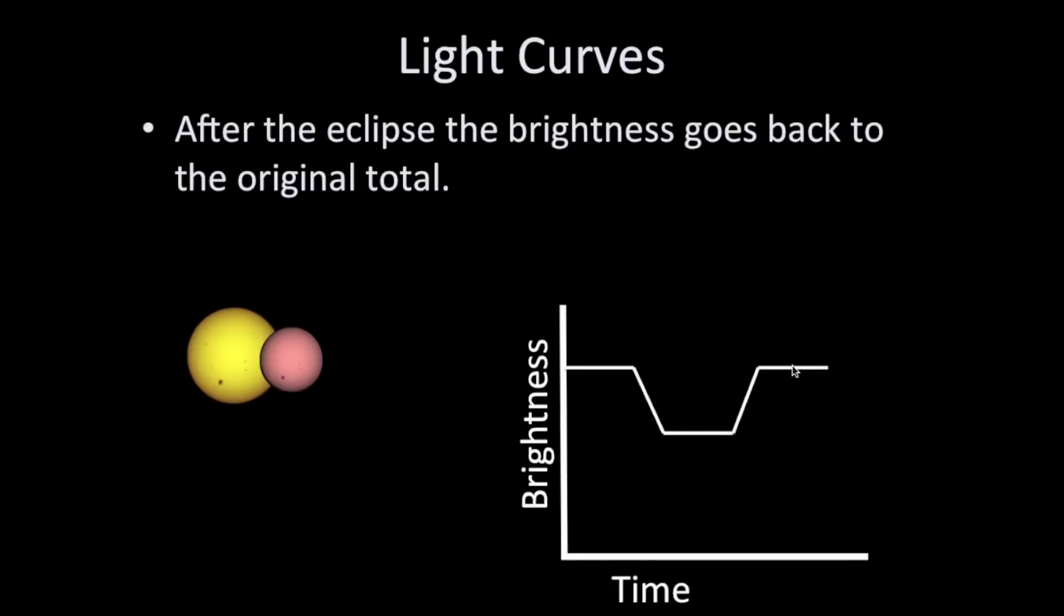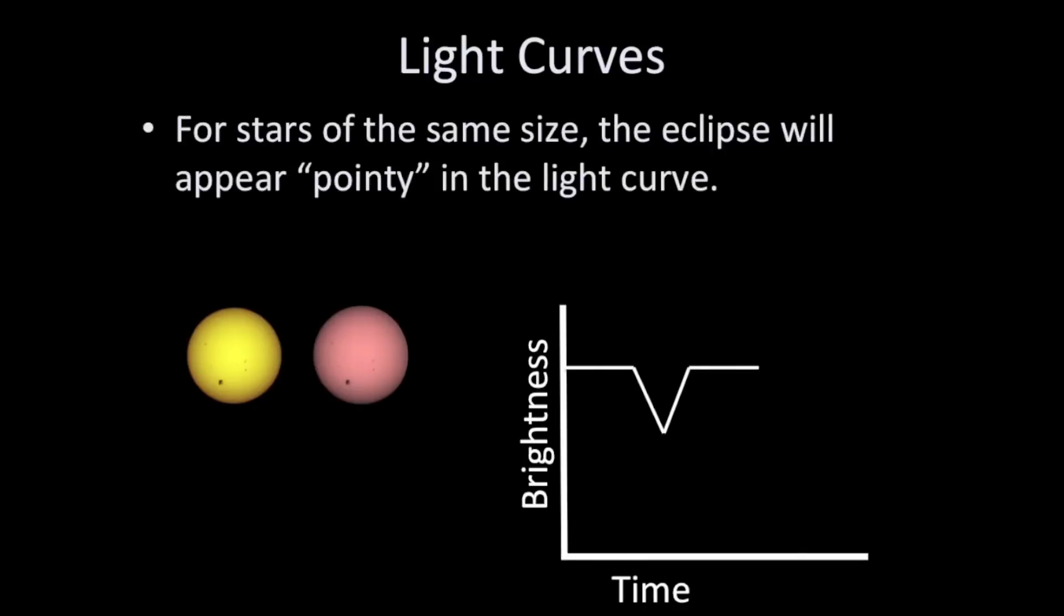What if the two stars were exactly the same size? Well, in that case, the duration of the eclipse would not last very long, and so the minimum of the brightness would come to a point. Here's what it looks like. For two stars that are the same size, one will go in front of the other, but it's a very short amount of time before it begins to move away. So the dip in the light curve will be a point.